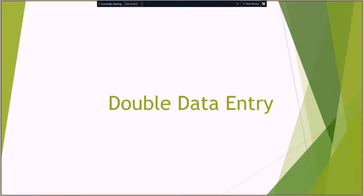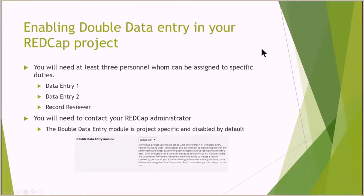How do you enable it? You'll need at least three persons that can be assigned to three different roles: data entry number one, data entry number two, and a record reviewer who will look over everything and make sure everything matches. You also need to contact your REDCap administrator. The double data entry module is project specific and is disabled by default, so a REDCap administrator will have to enable it for your specific project. It is standard in REDCap — just standard and default disabled, so most people miss this feature.